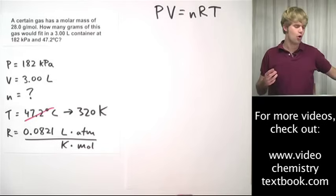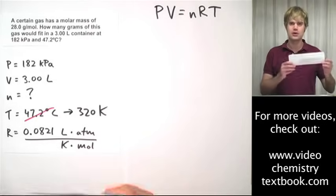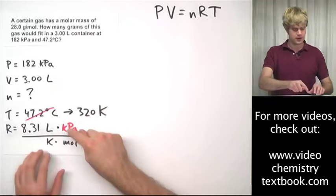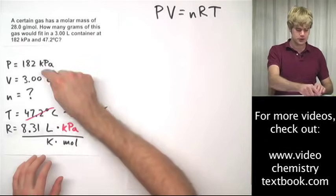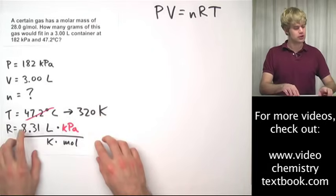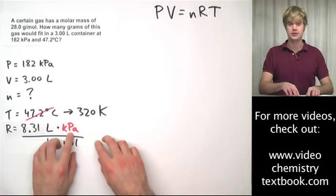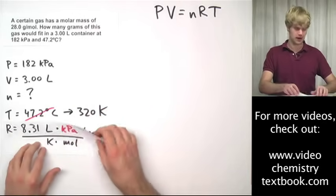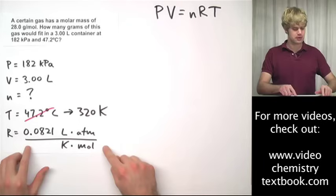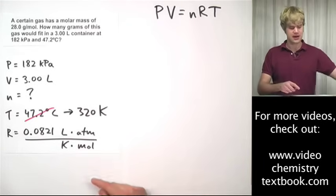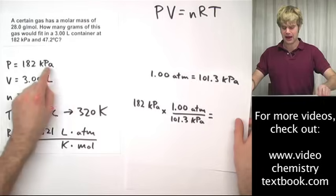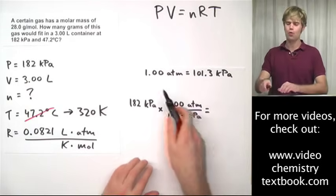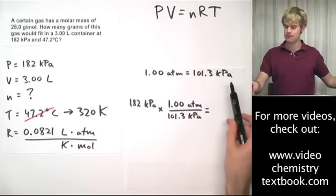There are two things I could do. One of these things that I could do is I could use a new R. I said earlier that you can use a different R so that your pressure units match. So I could use 8.31 which has kPa instead of ATM. That would be totally fine if you want to do that. What I'm going to do though is I'm going to stick with the R that I'm using right now and instead I'm going to convert kPa into ATM so that the units match.